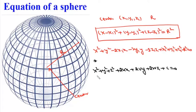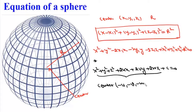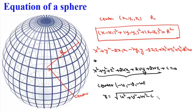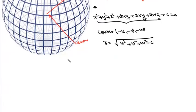If we are given the equation of a sphere in the general form, then we compare and write its center as (−u, −v, −w). We take the coefficients of x, y, and z, divide them by 2, and change the sign. Its radius will be given by √(u² + v² + w² − c).